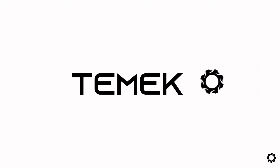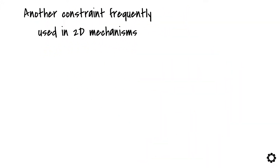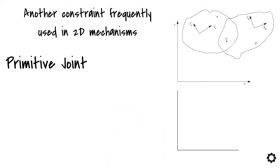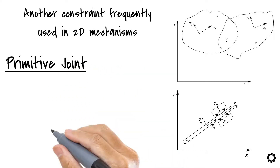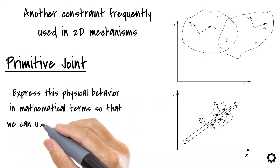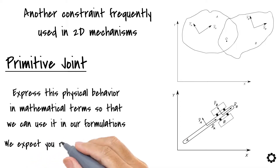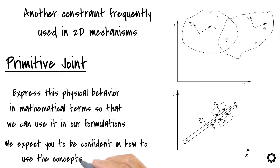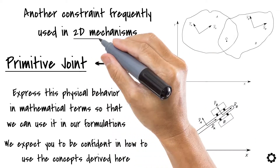Hi and welcome to Temeco. In this video, we will talk about another constraint frequently used in 2D mechanisms. We will talk about the primitive joint. As in the revolute and translational joints, we will see how this constraint works physically and how we can express this physical behavior in mathematical terms, so that we can use it in our formulations. By the end of this video, we expect you to be confident in how to use the concepts derived here to introduce a mathematical representation of the primitive constraint in 2D mechanisms.